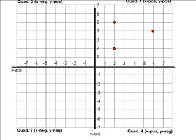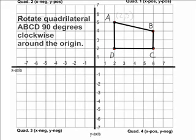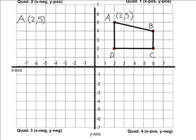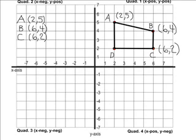Before we can rotate this figure, we must first find the ordered pairs of each vertex of our quadrilateral. Point A is located at positive 2, positive 5. Point B is located at positive 6, positive 4. C is located at positive 6 and positive 2. And D is located at positive 2, positive 2.